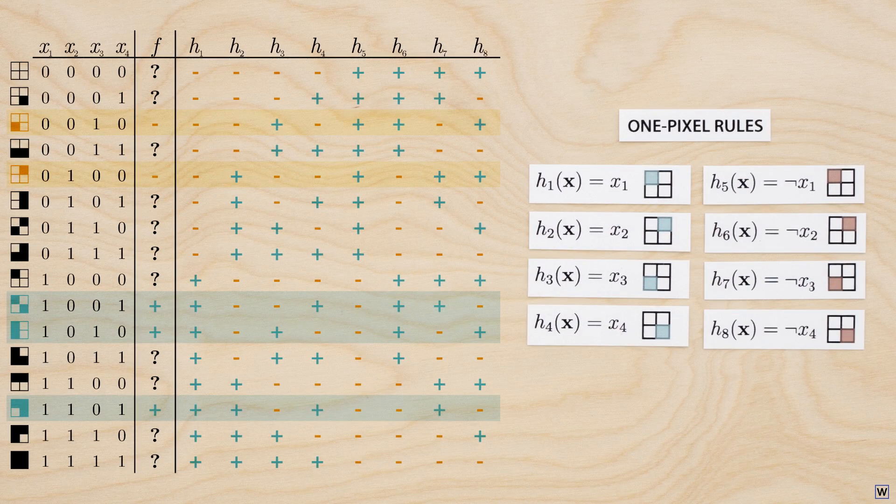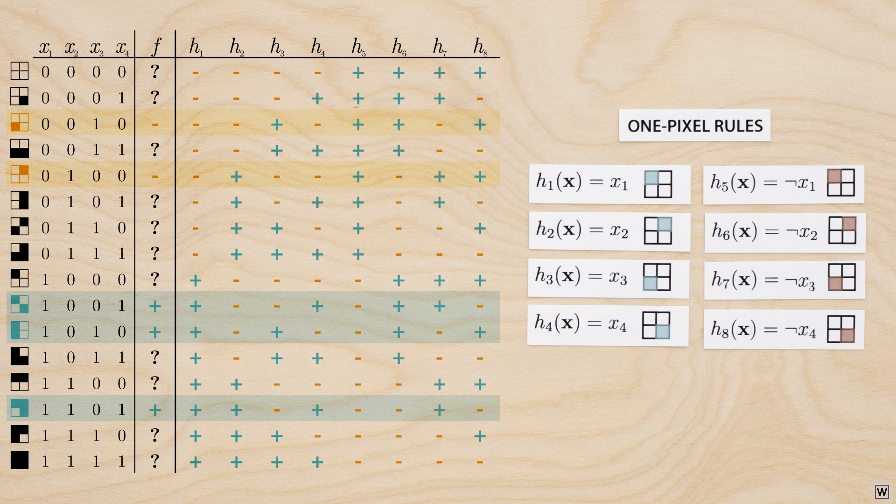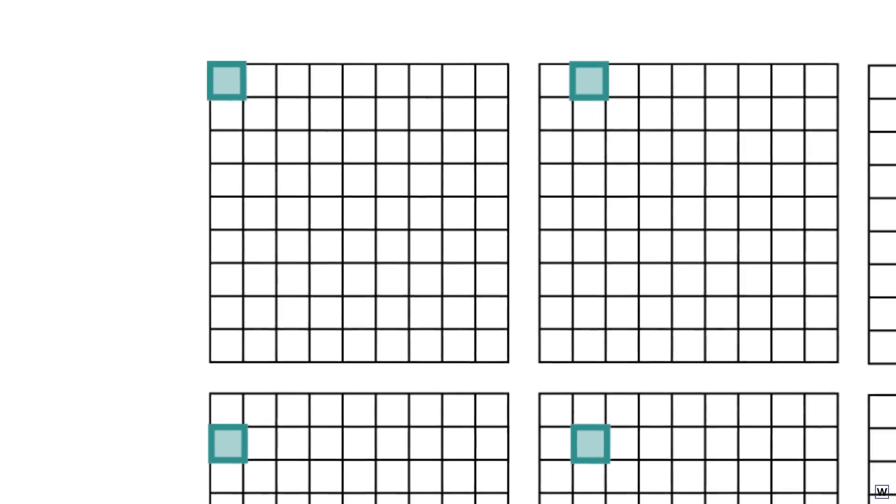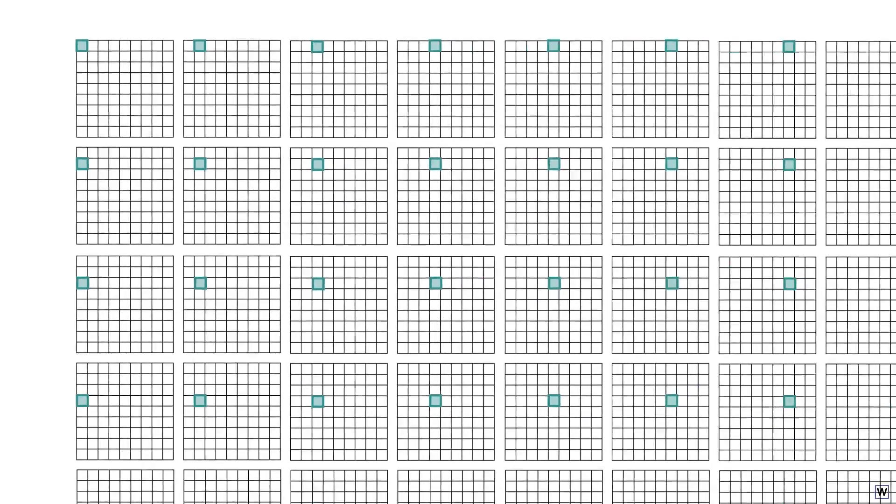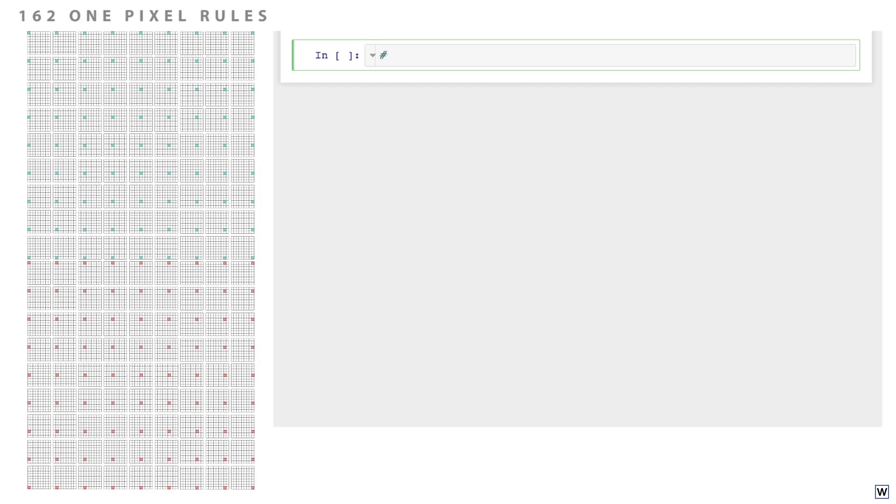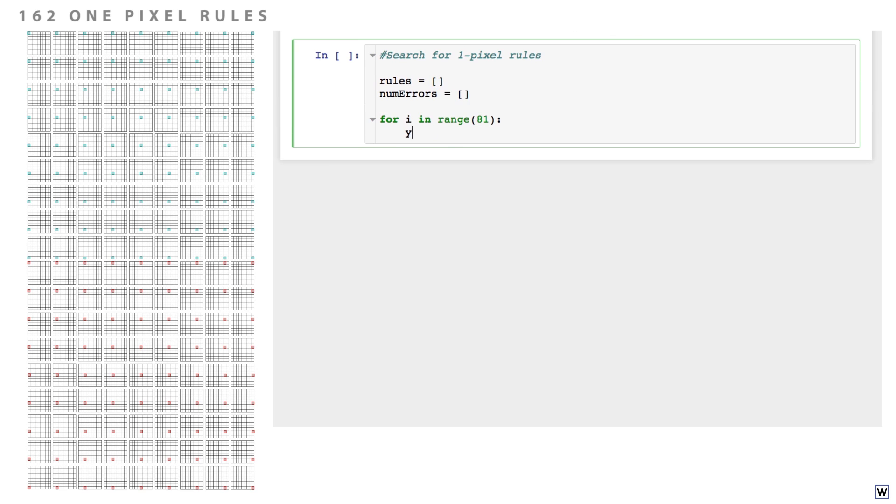This class of rules is probably still too simple, but we can crank up the variance later. There are 162 different single-pixel rules for our 9x9 data. We can quickly search through these with a Python loop, and we'll pick out the rule that makes the fewest errors on our training data.